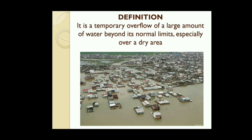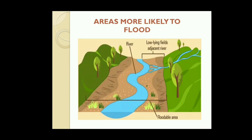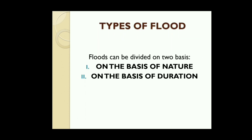It is a temporary overflow of a large amount of water beyond its normal limit, especially over dry areas. Generally, the natural behavior of flowing water is that it moves from higher ground to lower ground, so the lower areas experience more severe flooding, as is clearly visible in the figure.